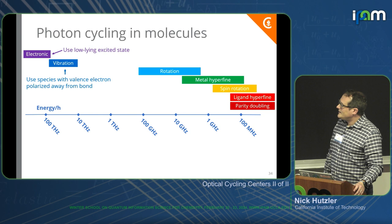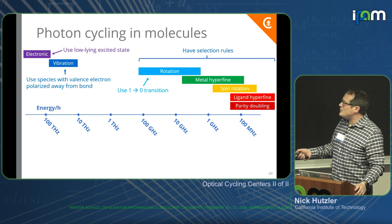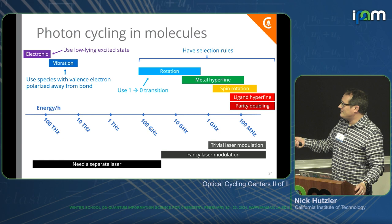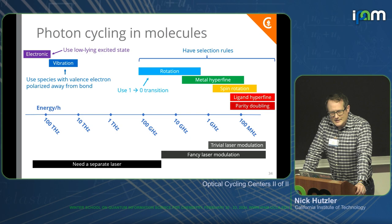Use a low-lying electronic state. Find a molecule where this vibration-electron decoupling happens. For these, you can use selection rules. For rotation, you can use a J=1 to J=0 transition. And then you can basically just modulate your laser to cover all these levels. That's how you kind of bridge the entire gap.